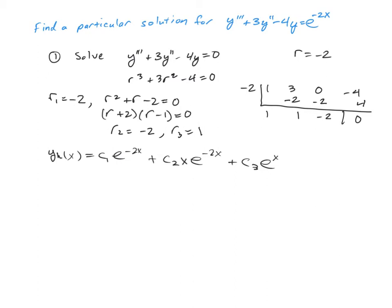Alright, so now if we look at our forcing term up here, our e to the negative 2x, you'll notice right away that it's actually one of the terms in our homogeneous solution. So we need to make sure we break the independence. But we already have an xe to the negative 2x as one of our terms as well. So we have to further go ahead and break that independence one more time. So we're going to actually have to have an x squared be our coefficient function on our solution. So this is the generic particular solution that we need.